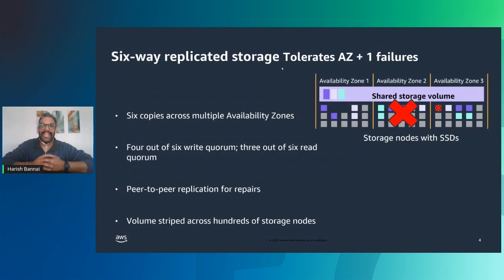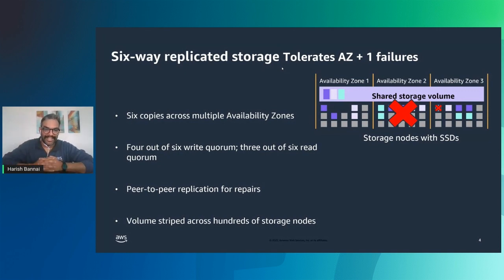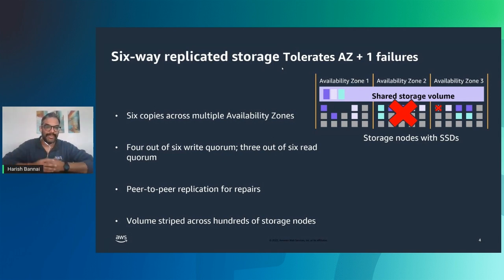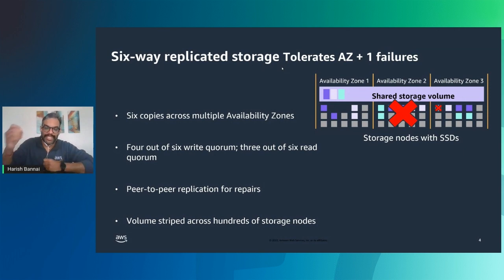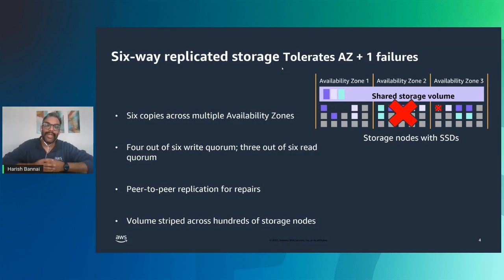Now let's look at the storage layer. Even though it's serverless, we still need storage hosted somewhere in the data center. Aurora Serverless is no different from provisioned Aurora in this regard — we still have the same six-way replication, with storage nodes replicated across three multiple availability zones. Even when a specific node is impacted, we are not going to lose the quorum. You would still have data served by the application and from the database. We use the same storage layer as in provisioned Aurora.